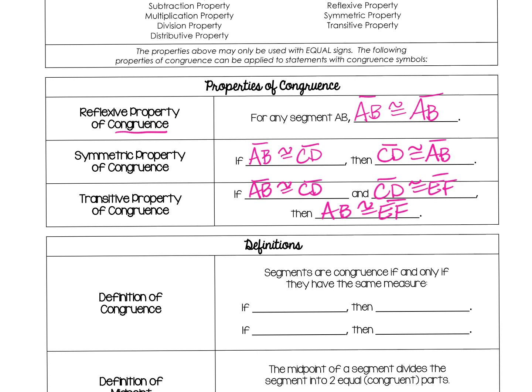The definition of congruence: if something's congruent, we know it's equal; if it's equal, we know it's congruent. There's actually a definition for that — if AB is congruent to CD, then AB is equal to CD, and it also works in reverse: if AB is equal to CD, then it is also congruent. That will always be the case, and you're going to use it a lot. It'll seem awkward at first, but the more you use it the more familiar it will become.